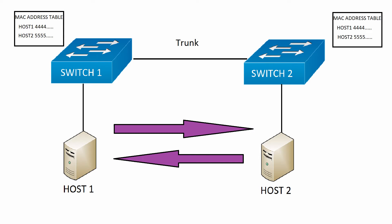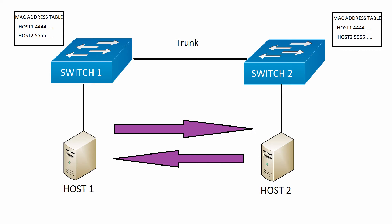I gave that example because VXLAN essentially does the same thing. For our VXLAN example, we're going to update our initial topology. Our switches are now going to have programmable fabric in them — a marketing term that means they support additional features, which is VXLAN. We're going to remove the trunk between those switches and connect them up to a spine switch, which is a layer 3 device capable of supporting our needs.